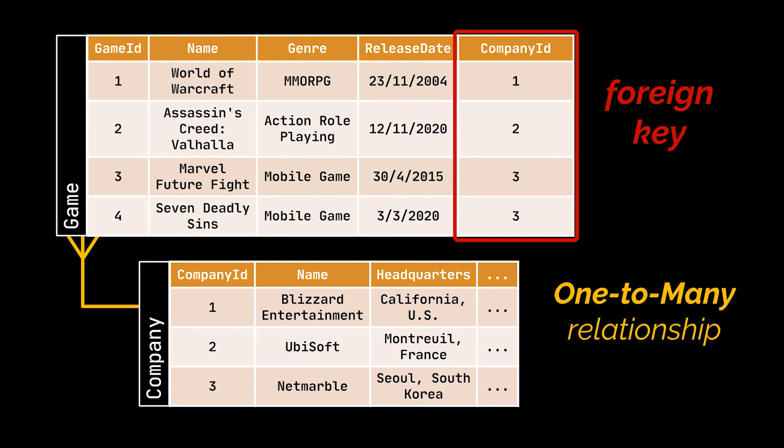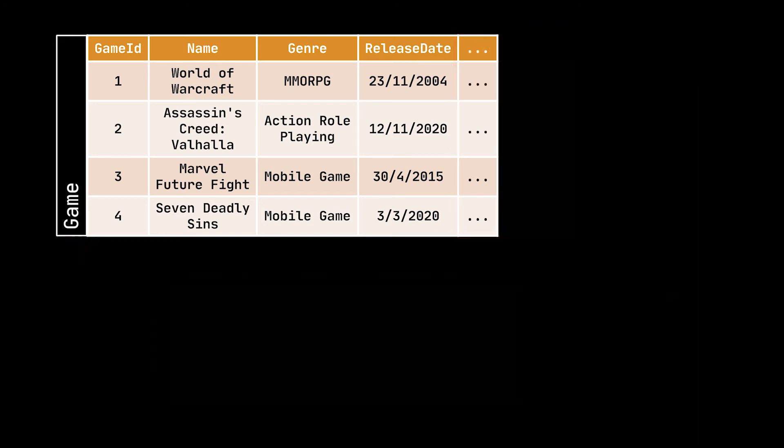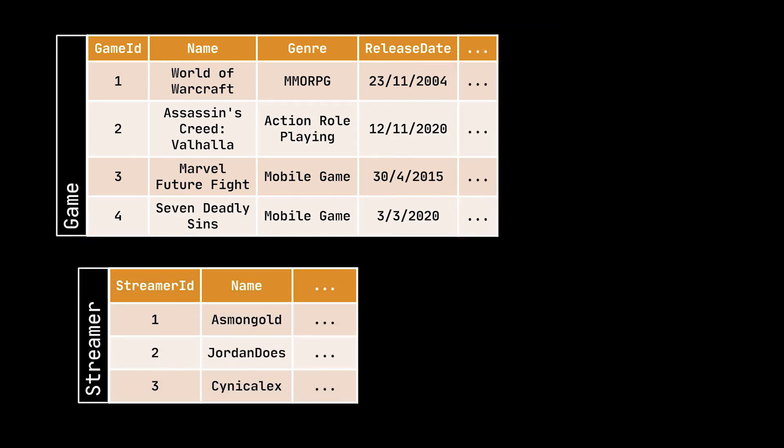In other words, the company isn't required to have many games — it might have no games at all or only one. But the database's internal rules support the idea of having none, one, or many games per company. However, the opposite is not true, as a game can only belong to one company.